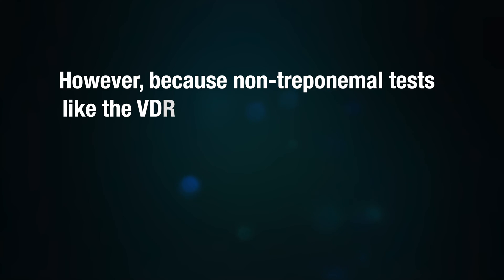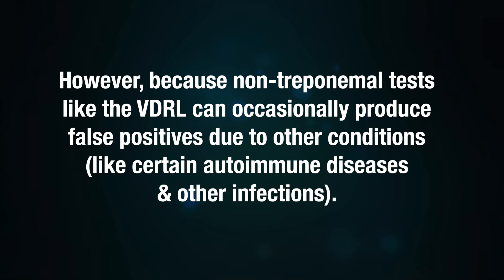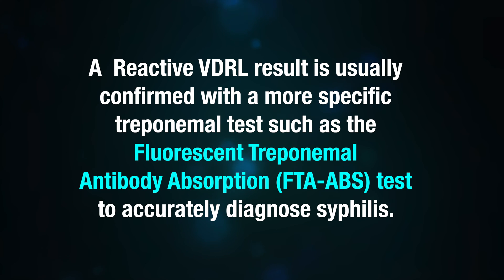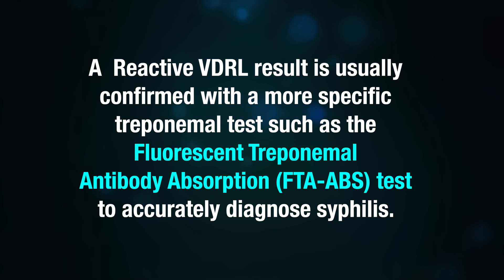However, because non-treponemal tests like the VDRL can occasionally produce a false positive due to other conditions such as certain autoimmune diseases and other infections, a reactive VDRL test is usually confirmed with a more specific treponemal test, such as the Fluorescent Treponemal Antibody Absorption test, to accurately diagnose syphilis.